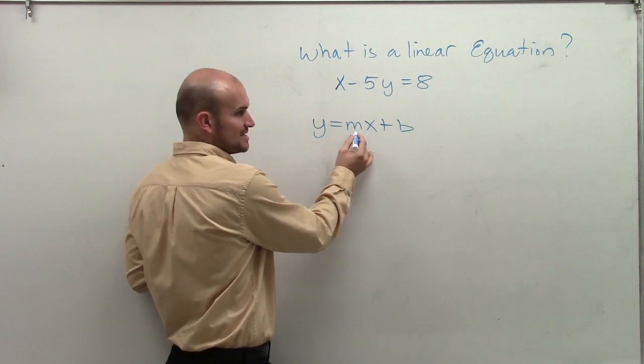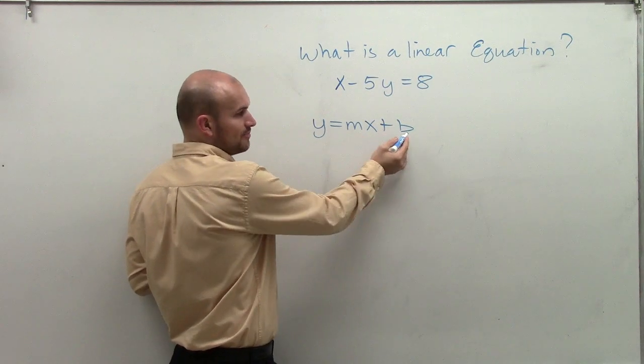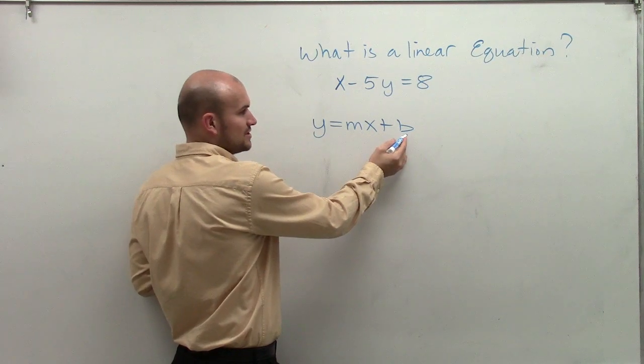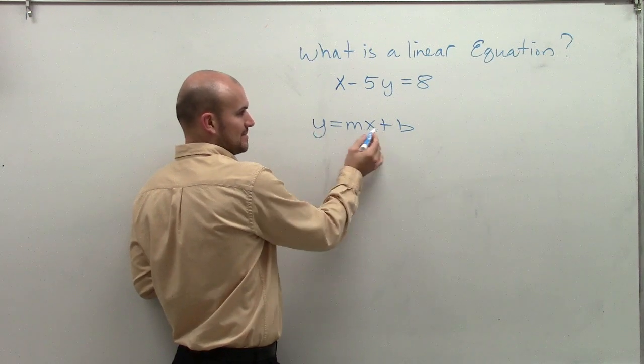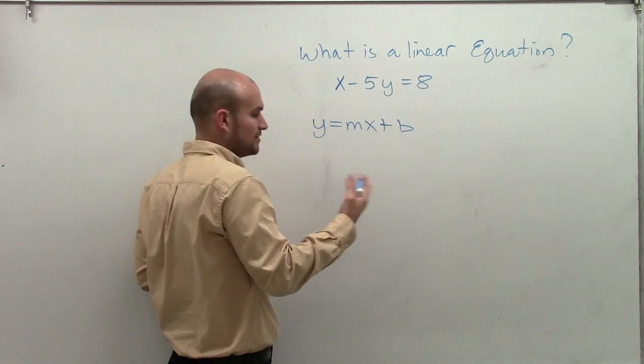Remember, m represents a real number, which is your slope. b represents a real number, which is your y-intercept. And x and y are your variables of your coordinate points.